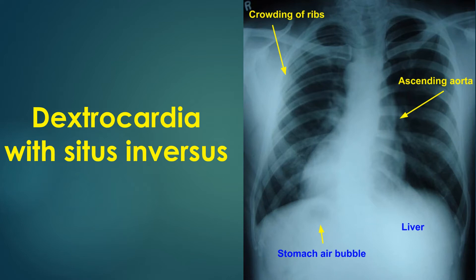There is mild scoliosis with convexity to the left, which could be partly positional. Crowding of the upper ribs on the right side could be due to scoliosis.